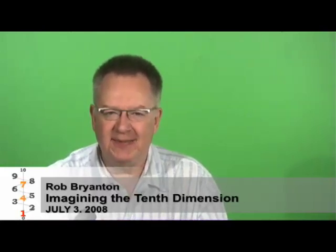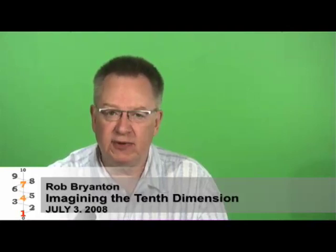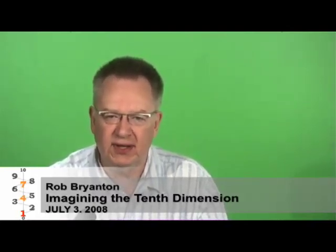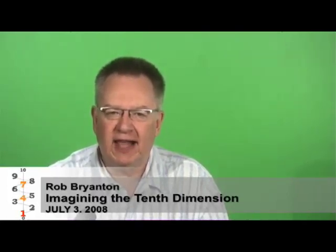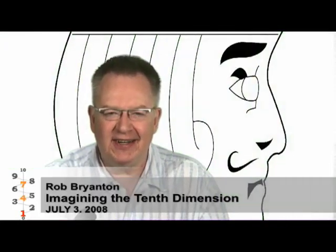One of the questions that sometimes comes up about the original Imagining the Tenth Dimension animation is that it doesn't really show what a flatlander's world would look like to a flatlander. The concept of 2D creatures living in a flat two-dimensional world was first introduced to us by Edwin A. Abbott in his 1884 novel Flatland: A Romance of Many Dimensions. In the original animation we started out by imagining our flatlander as the one-eyed jack on an impossibly flat playing card. We're looking at the original image Jason Orban of O-Media drew for me as a representation of what I'm describing here.